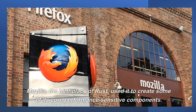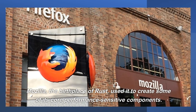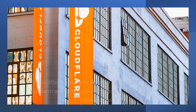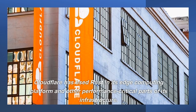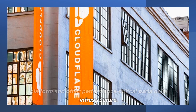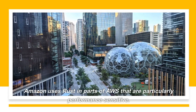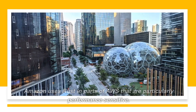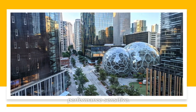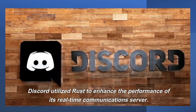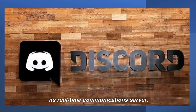Mozilla, the birthplace of Rust, used it to create some of its core performance-sensitive components. Cloudflare has used Rust in its edge-computing platform and other performance-critical parts of its infrastructure. Amazon uses Rust in parts of AWS that are particularly performance-sensitive. Discord utilized Rust to enhance the performance of its real-time communications server.